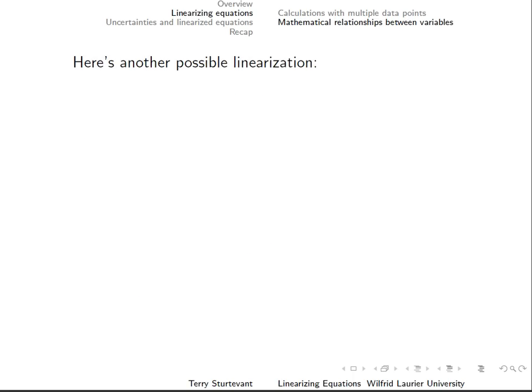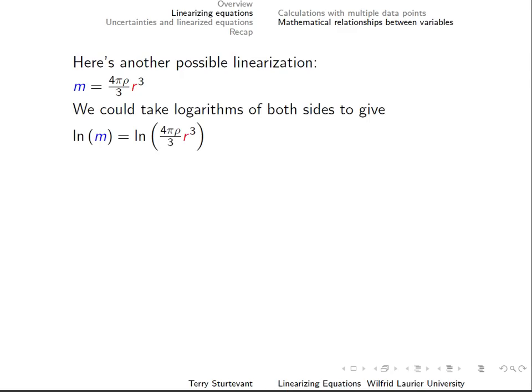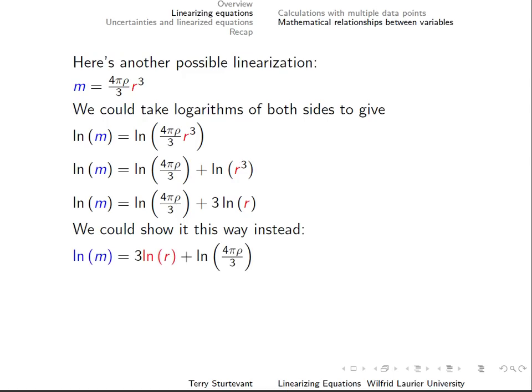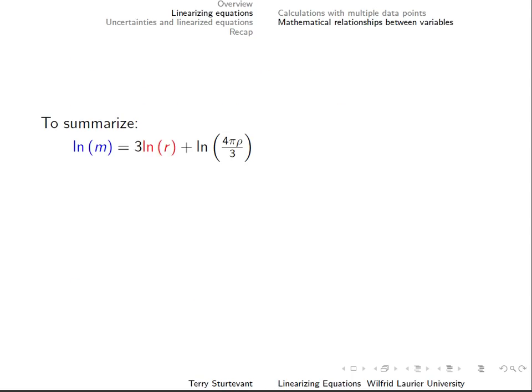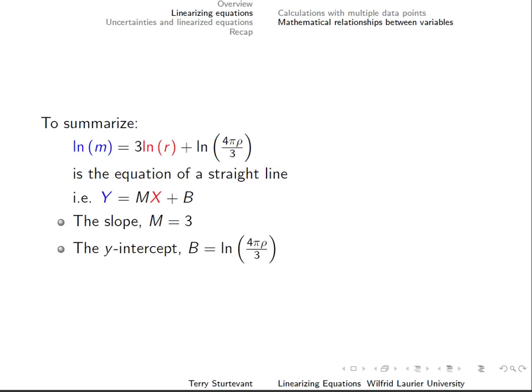Another option comes from taking logarithms of both sides of the equation following a similar procedure. In this case, the slope should equal a constant, 3, and the density is incorporated into the y-intercept.